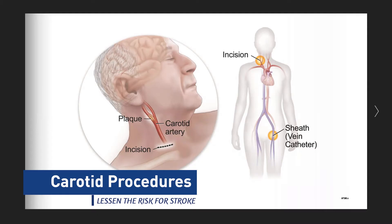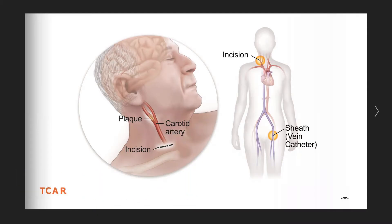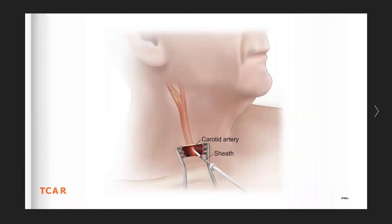The TCAR procedure uses a smaller incision based more near the clavicle and also a small puncture wound near the vein in the groin called the femoral vein. This diagram shows the TCAR procedure initial access through that small incision at the base of the neck. A small IV or sheath is placed, giving us access into the common carotid artery through a very small incision.